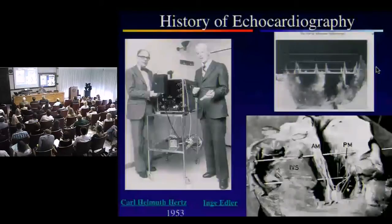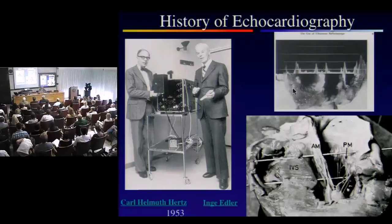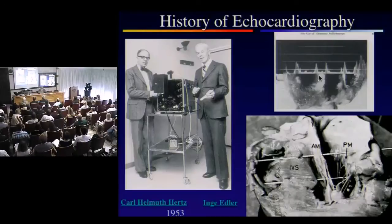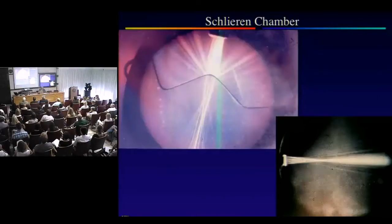They produced the first mode, called A mode or amplitude mode. Dr. Edler saw something moving backwards and forwards and said it was the pericardium. When a patient died, he took an ice pick and at autopsy plunged it through the heart in the same direction as the ultrasound probe. He found that the echo moving backwards and forwards was actually the A-mode amplitude of the mitral valve. Depth was on one axis, amplitude on the other — this became known as the ice pick view.